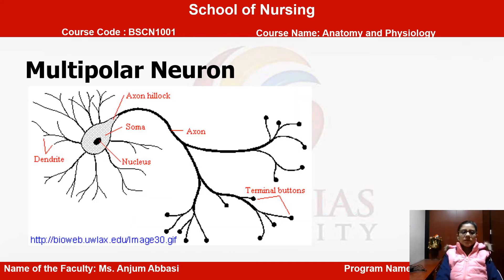Here you can see the multipolar neuron diagram. As the name suggests, you can differentiate it from bipolar based on structure — it is having multiple poles. The upward projections are dendrites. Coming down there is the axon hillock, then myelination, and then there are terminal buttons.